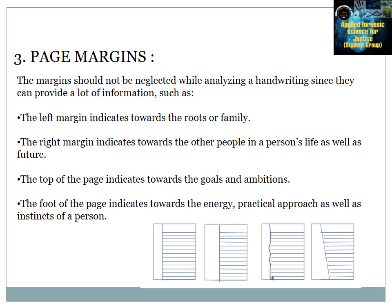The third feature is page margin. The left margin indicates towards the root or family — meaning we are close to our roots and family. The right margin indicates towards other people in personal life as well as the future, meaning we are very interested in someone's personal life. The top of the page indicates goals and ambitions, meaning we are highly motivated and determined. The foot of the page indicates energy, practical approach, as well as the sexual energy of the person.